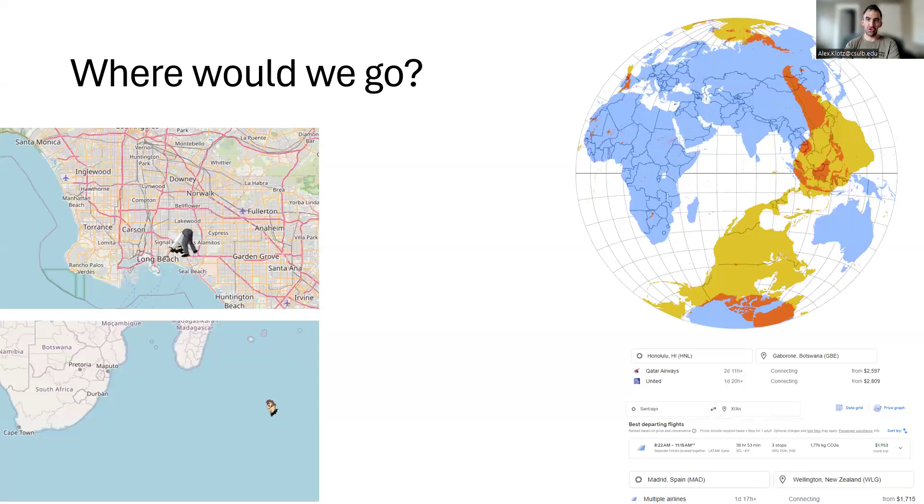This map shows a projection where when land is across from land, it's colored dark orange. You can see there's not a lot available, mostly between South America and Southeast Asia and China. There's a few routes such as Santiago to Xi'an or Hawaii to Botswana or Spain to New Zealand that might be appealing.